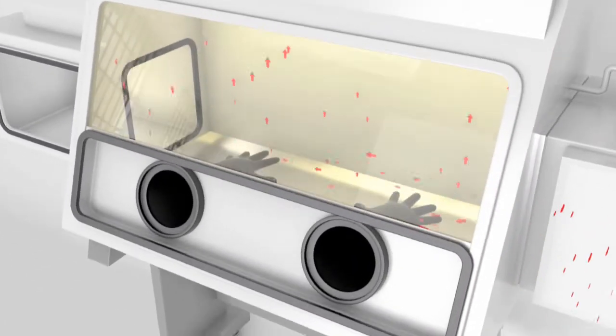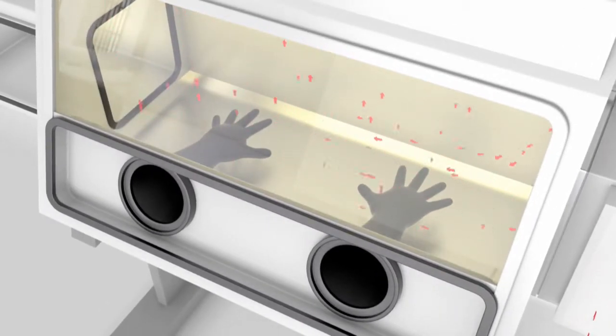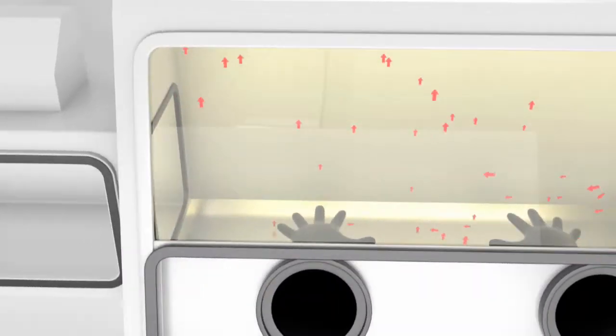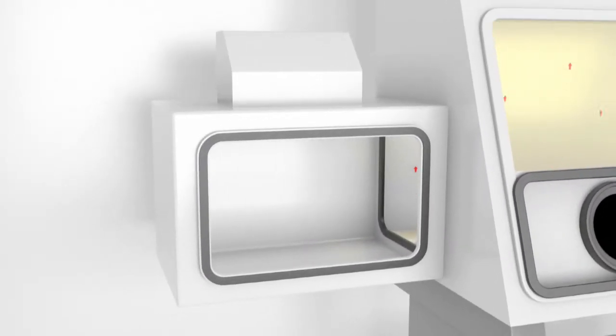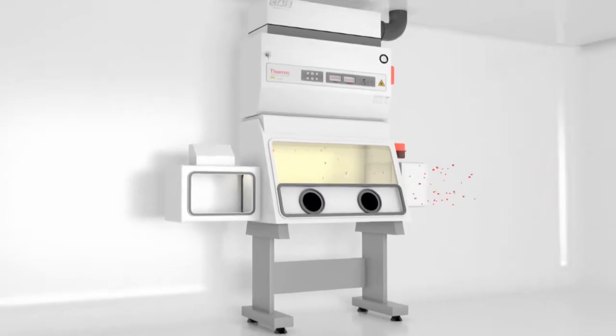Access to the work surface is by means of heavy duty rubber gloves attached to ports in the cabinet door. The class 3 cabinet has a pass through box attached that can be sterilised and equipped with a HEPA filtered exhaust, or a double door autoclave can be connected for the decontamination of all materials entering or exiting the cabinet.